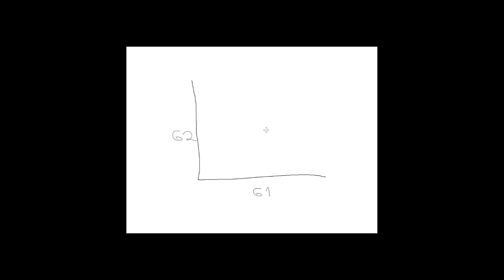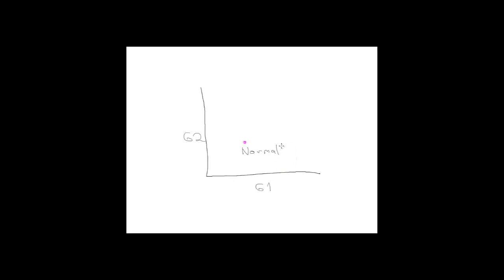Let's say that both of these genes are expressed at a higher level in some diseased tissue when we compare it to neighboring normal tissue. Now we have a relevant cell line where in that cell line the expression of gene 2 is almost the same as in the normal tissue compared to the disease, but gene 1 is slightly highly expressed.